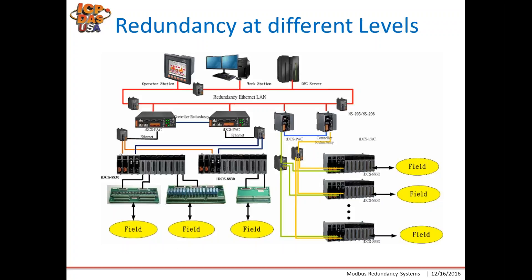Engineers need to identify the parts of the automation system that are most critical and have the possibility of failure. If the expectation is to have problems with communication, there will be redundant communication systems. If the control flow is critical, they may opt for redundant controllers. The final part is the field device with IO redundancy. An automation system can have none or any combination of redundancy depending on the critical components. The picture shown here shows all types: at the top we have redundant controllers or operator interfaces connected by a redundant communication line using ICP-DOS NS205s, or you can also put in ring switches which will provide a redundant path.